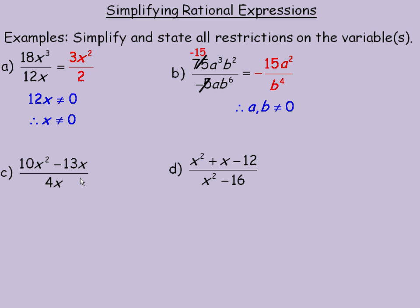For c, we'll start getting into more than just monomial expressions, there's a binomial in the numerator here. And as soon as you get past one term, look at what's the common factor of 10x squared minus 13x. And I can common factor an x out of both of those terms.